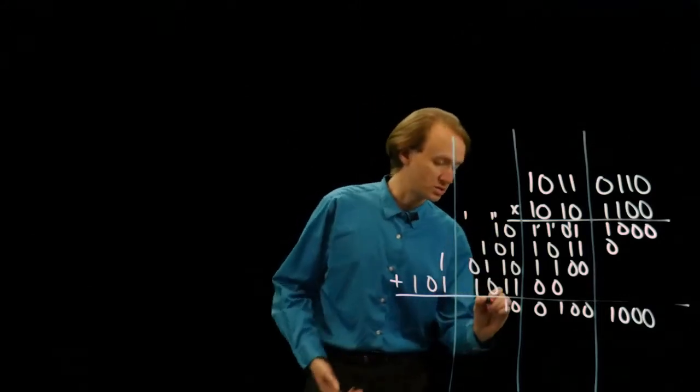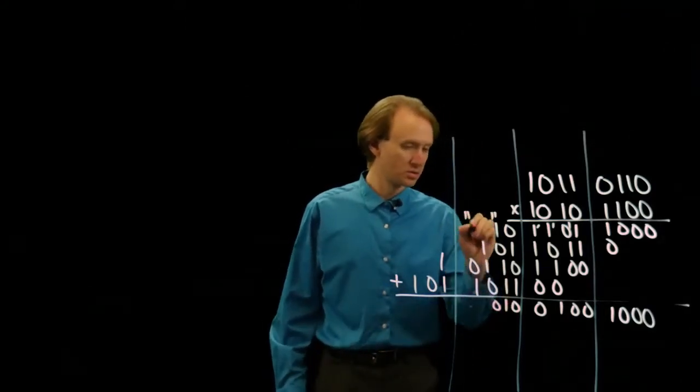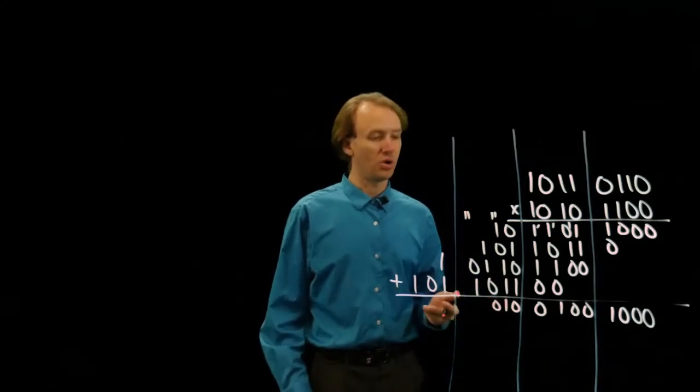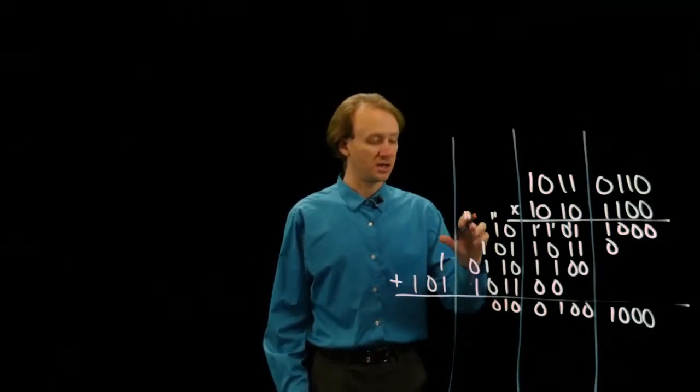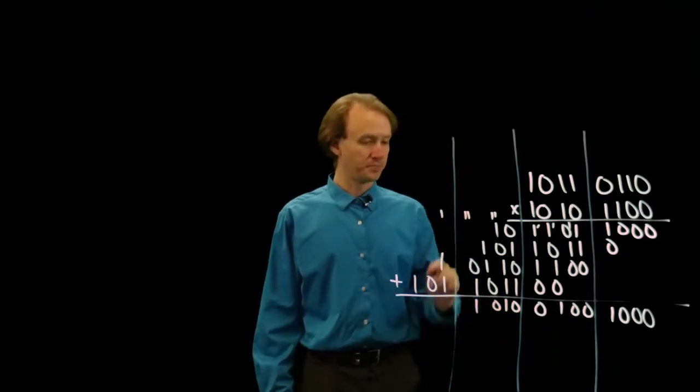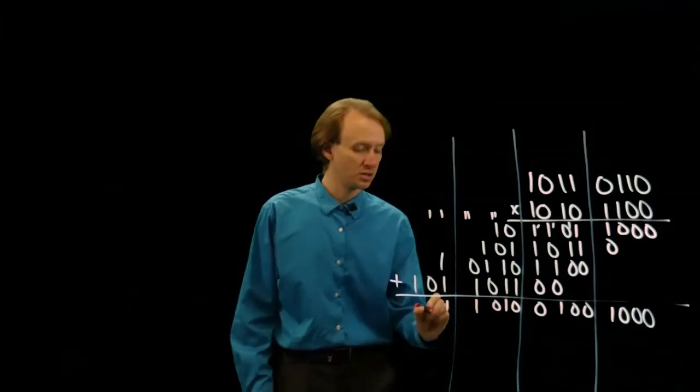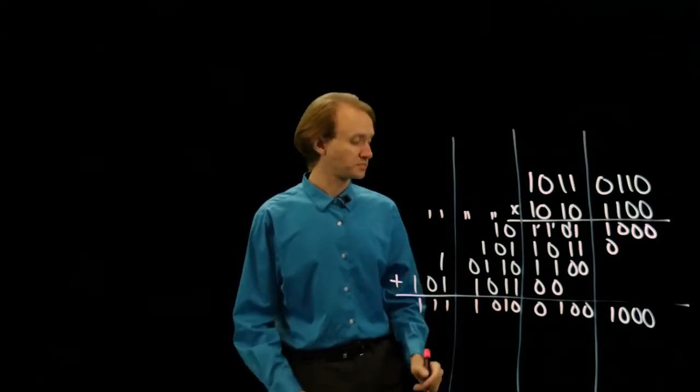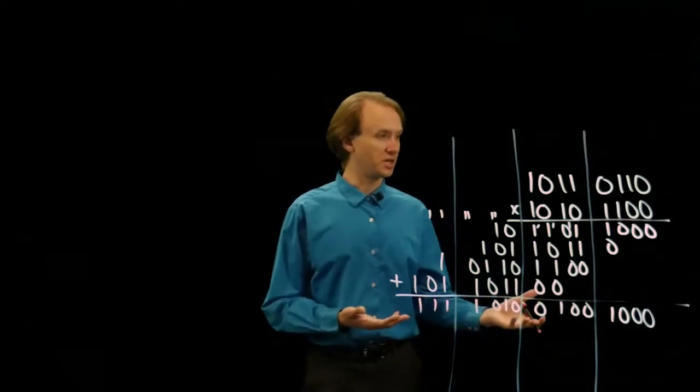So now I've got 1 plus 1 is 10. So I'll write down a 0, carry a 1. I've got 1, 10, 11. So 1, carry a 1. 1, 10, 11. 1, carry a 1. 1, 1. So that's the result I should get for multiplying these two numbers.